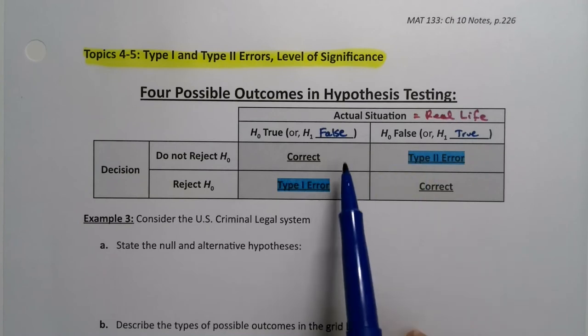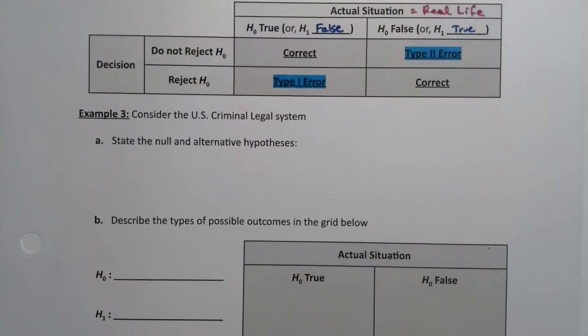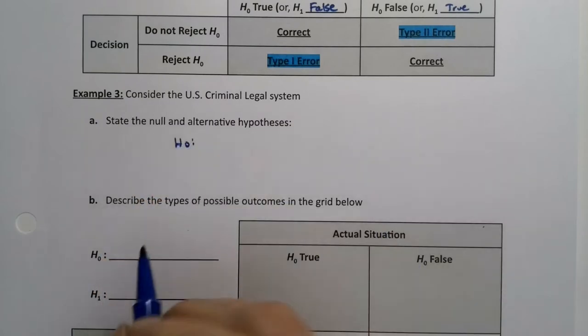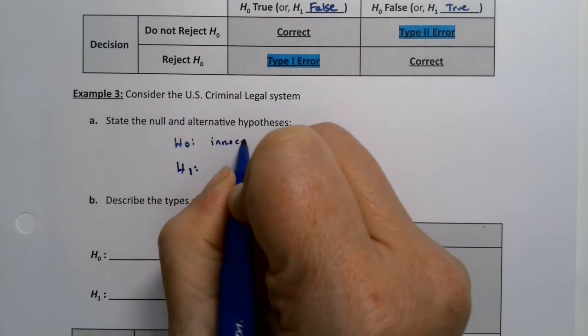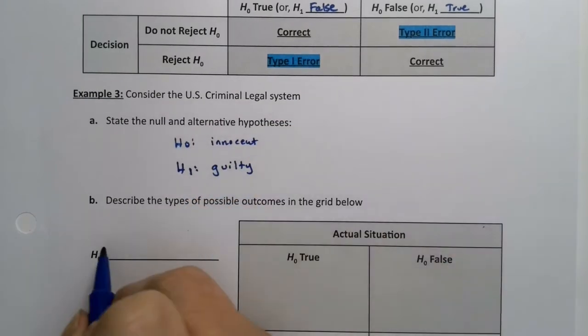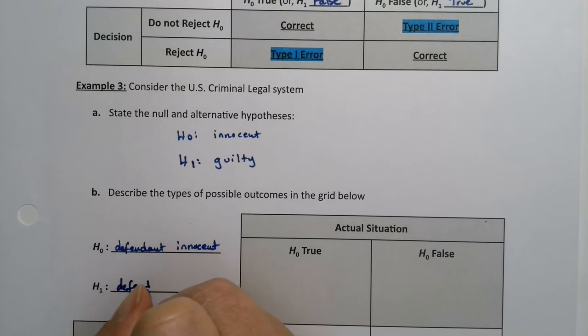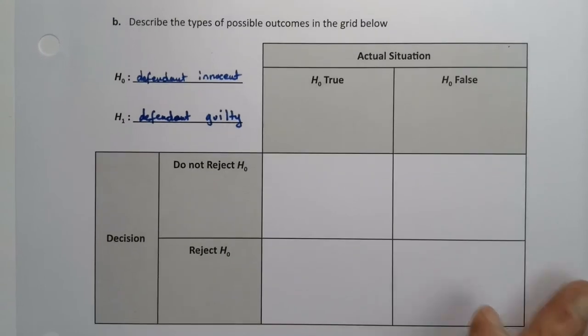Let's see a real life, very important example. Let's talk about the U.S. criminal legal system. So in U.S. criminal law, by definition, I'm going to write it in both places. Because the null hypothesis is supposed to be innocent until proven guilty. So that will be our null hypothesis. The defendant is innocent. That will be the null hypothesis. And the defendant is guilty. Now we are going to fill out this table, this grid. Very important grid to fill out. And we're going to have to do this multiple times in the course.